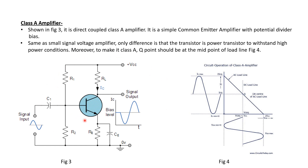Looking at the circuit diagram in detail: this is a simple voltage amplifier in common emitter configuration. R1 and R2 provide potential divider bias to stabilize the Q point. RL is the load resistance, and RE with CE is a combination used for further stabilizing the Q point of the transistor. These are the basic components of the Class A power amplifier circuit.